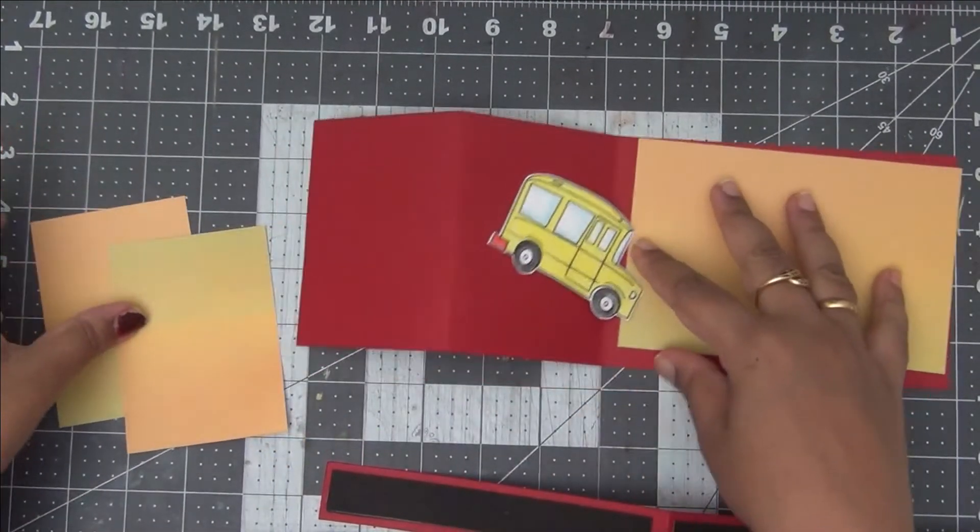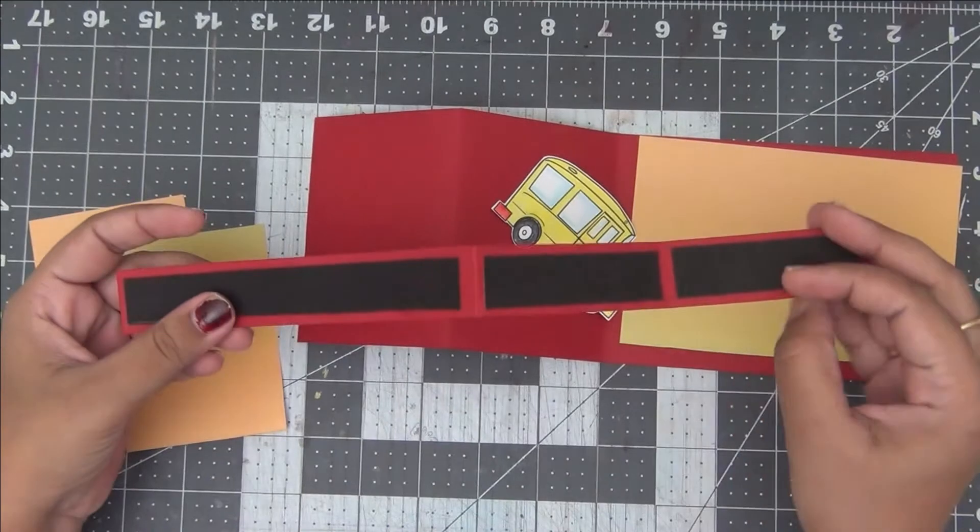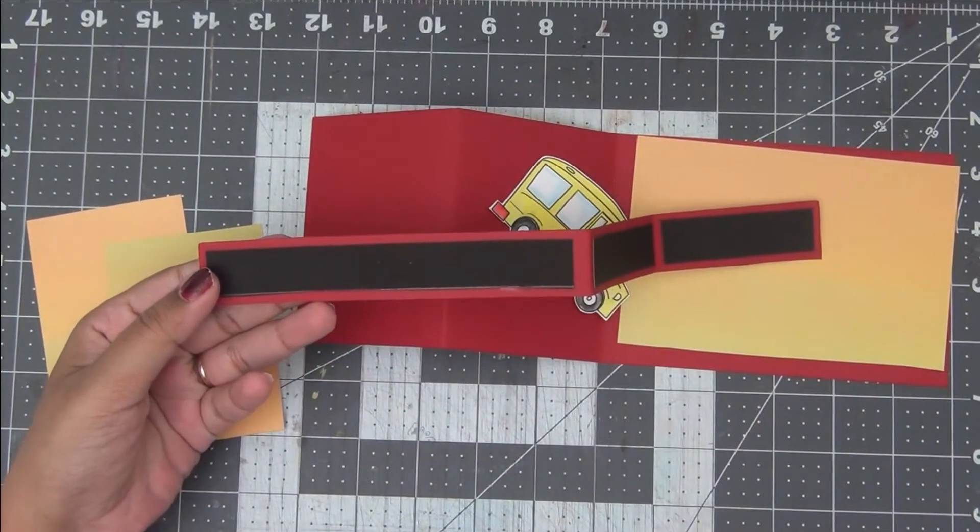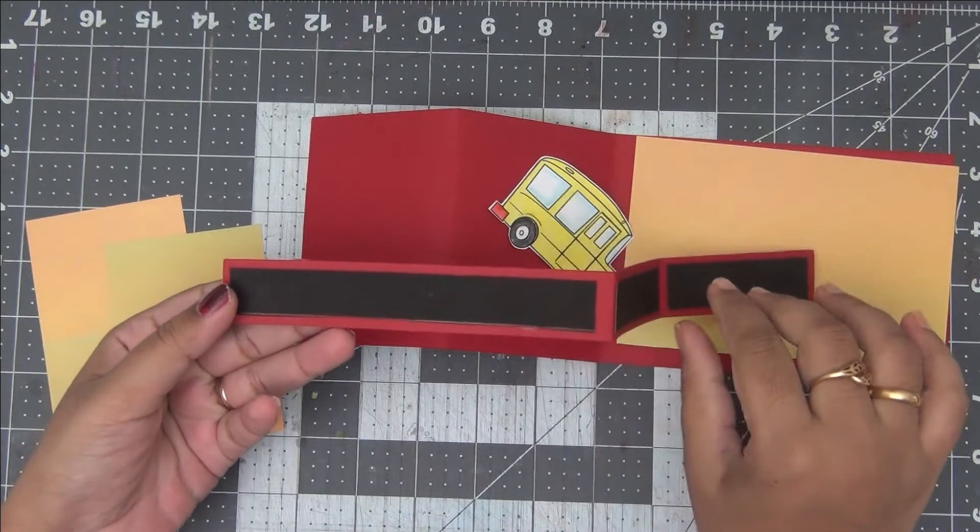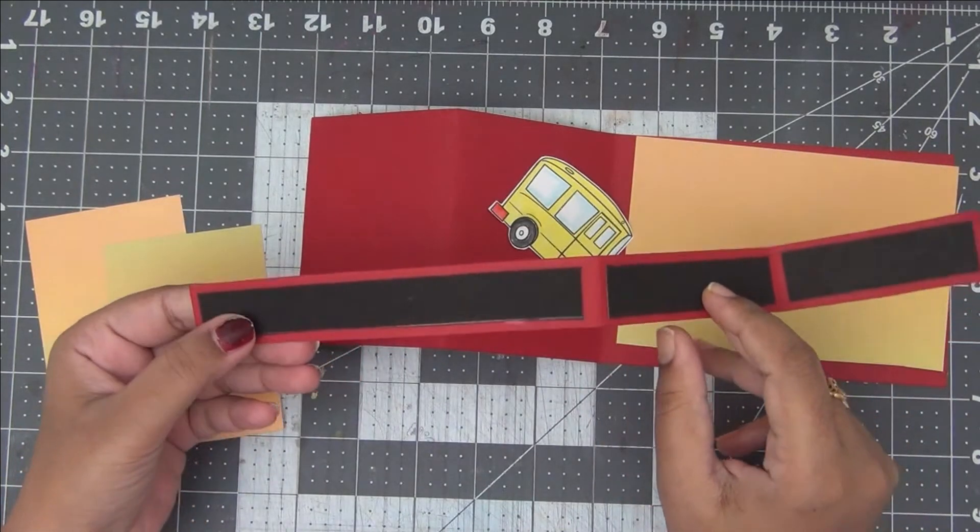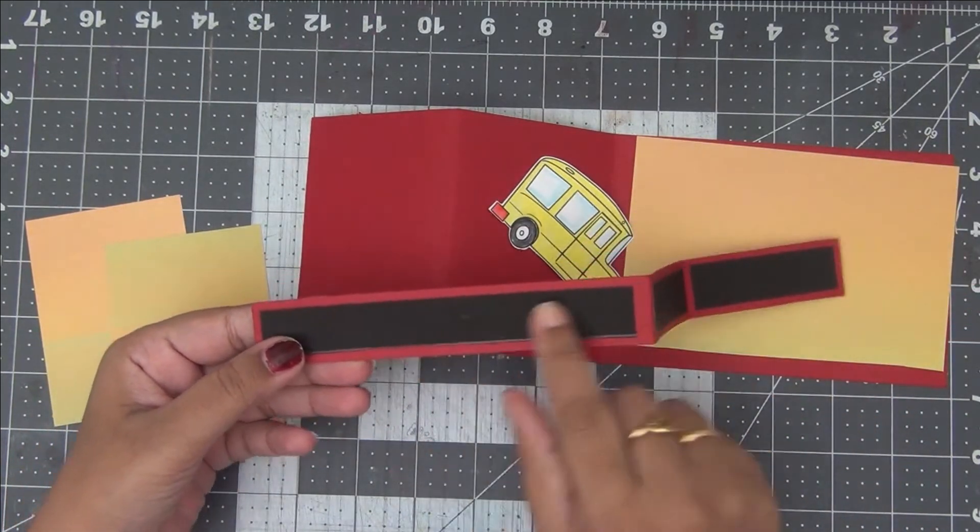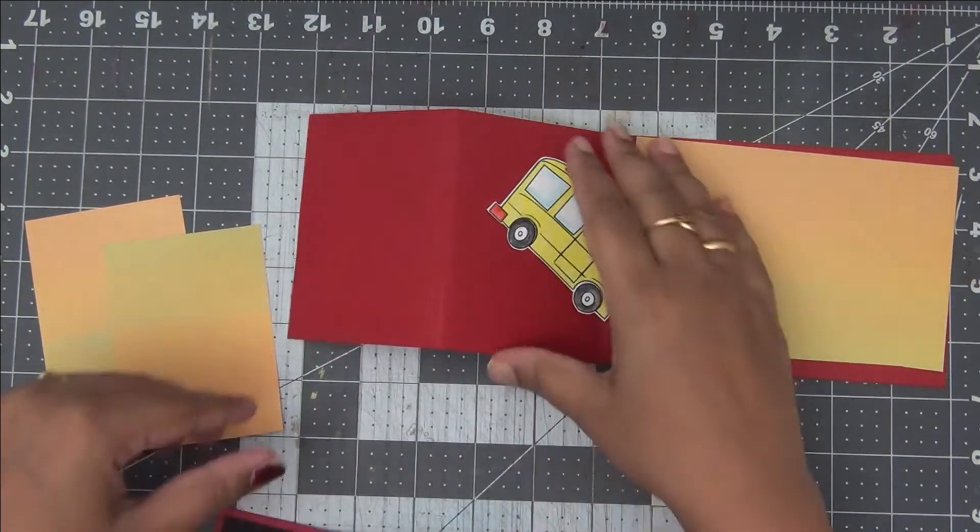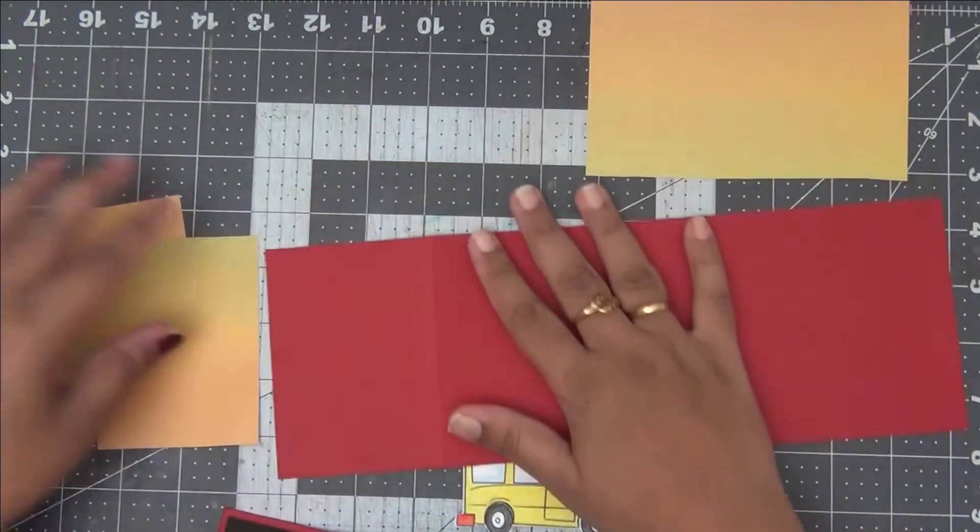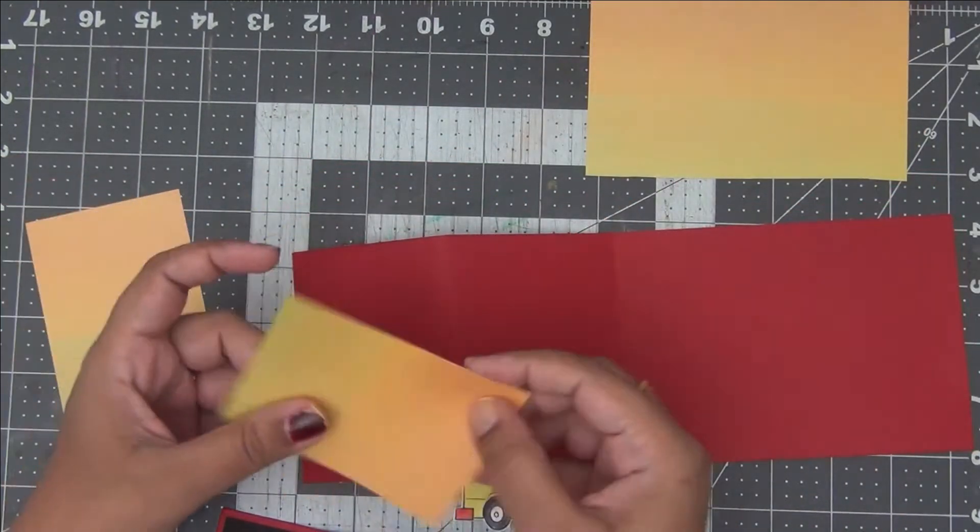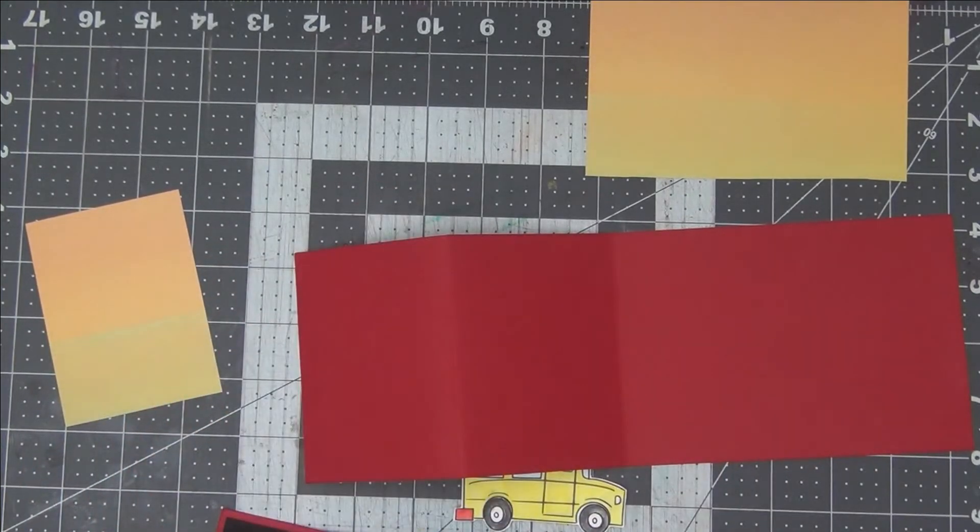As you can see here, I have cut out my pattern papers into size. I will be using them for the background, and the 1 inch strip I've pasted black cardstock onto it. I wanted this to look like a road on which my school van will be going, so I've just pasted some black cardstock onto this 1 inch strip. So I will quickly go ahead and add all these pattern papers onto my base cardstock.